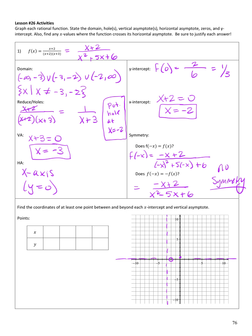Before drawing, I need coordinates of at least one point between and beyond each x-intercept and vertical asymptote. I'll use negative 5 to the left of the vertical asymptote, negative one half between the asymptote and the hole, and then 1 or 2 after the y-intercept. Using a calculator: negative 5 gives negative one half, one half gives about 0.29, and 2 gives 0.2.